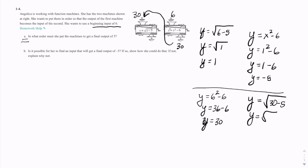Y equals the square root of 25, and the square root of 25 is 5. So the 5 comes out here.